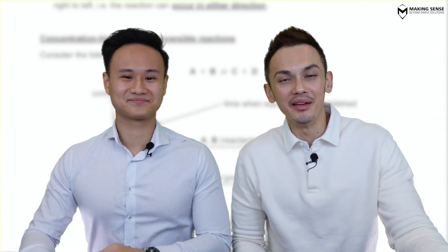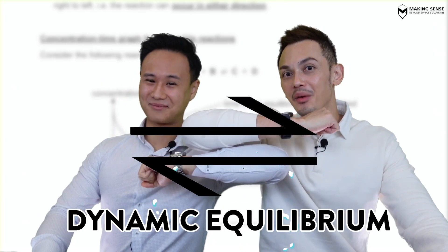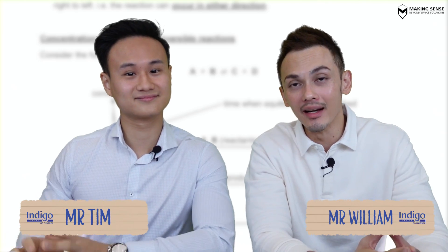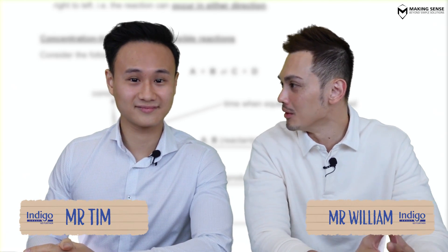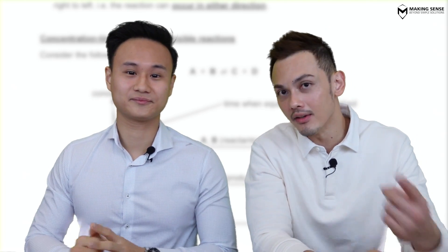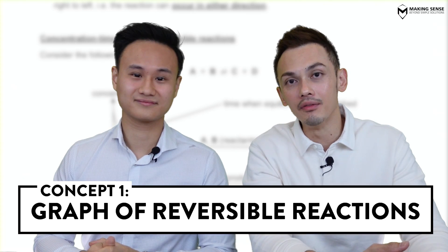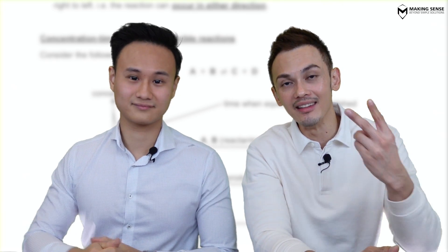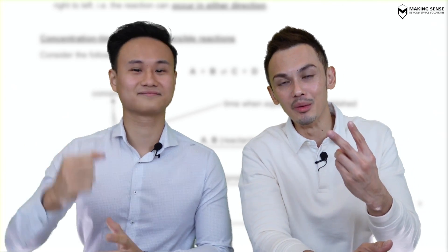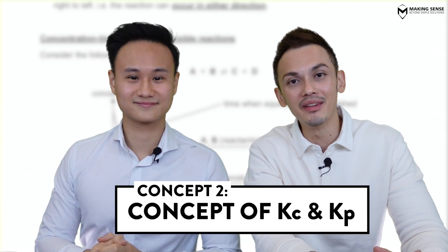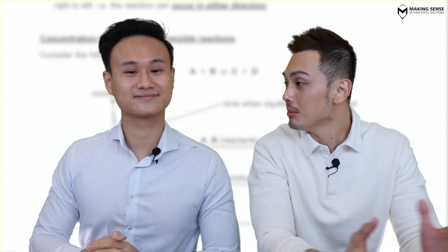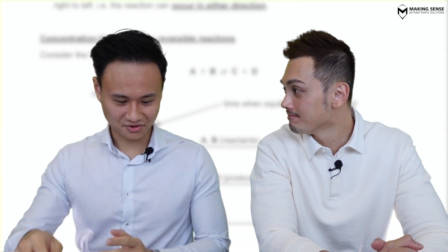Today we are going to talk about Dynamic Equilibrium. In the last lesson, there were two major concepts explained. The first is on the graph of reversible reactions, and the second is on the concept of Kc and Kp. Shall we jump into the first one? Let's go!